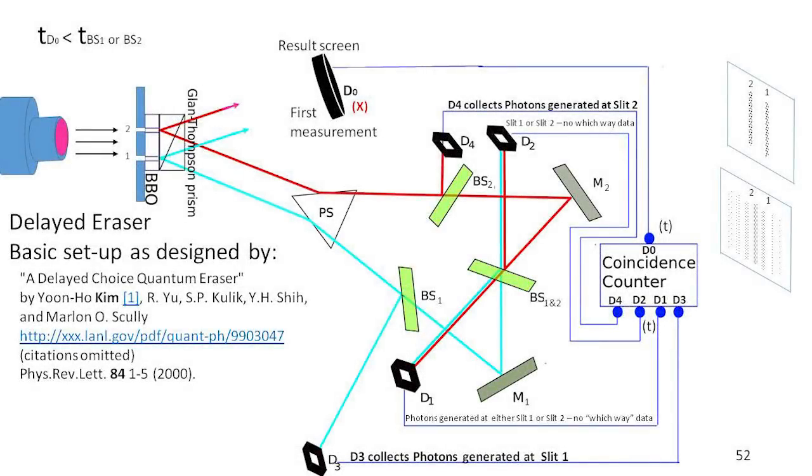Here we have the last experiment. This is a copy of the Delayed Choice Quantum Eraser that was done by Scully, Kim, Kulik, and Shi, published in 2000.